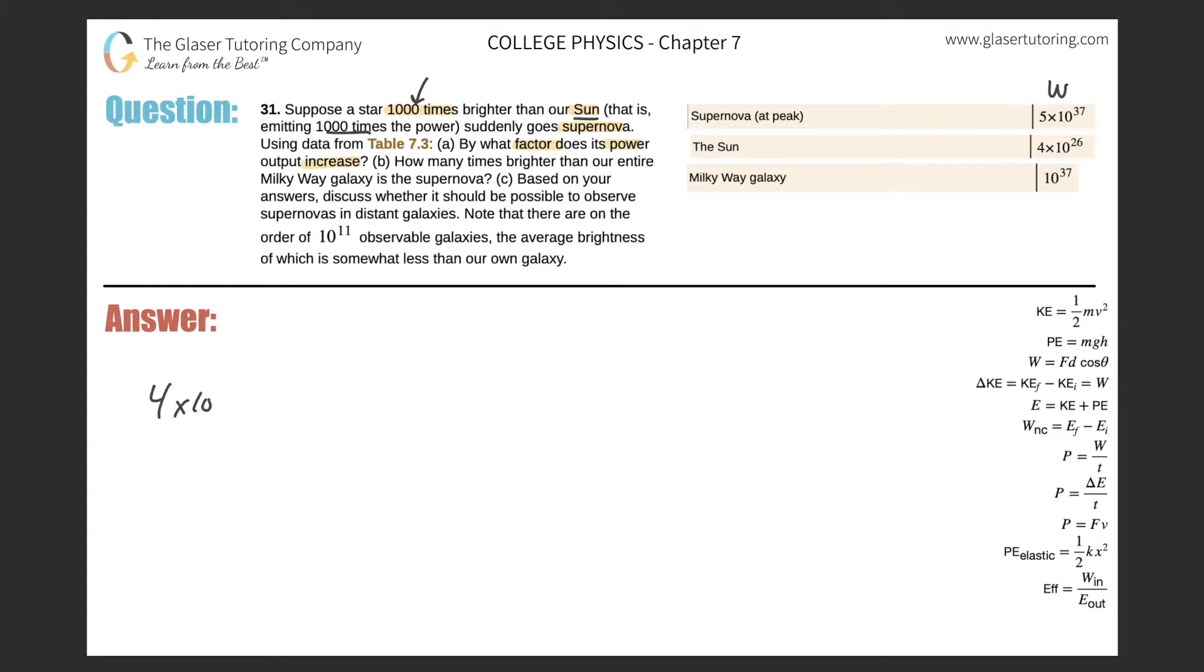let's take the 4 times 10 to the 26, that's in terms of watts, and multiply that by 1,000. This would then give us the wattage of a star that is 1,000 times brighter. So this simply becomes 4 times now 10 to the 29th. And that's in terms of watts.